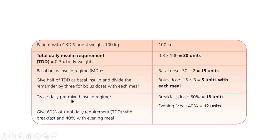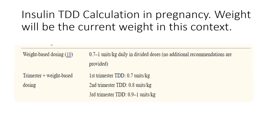If giving twice-daily pre-mixed insulin — such as Mixtard 30, Humulin 30/70, NovoMix 30, or Humalog Mix 25 — two-thirds (60%) of the dose is given in the morning at breakfast, which is 18 units in this example, and one-third (40%) is given at the evening meal, which is 12 units. For a pregnant patient, weight used is current weight, not pre-pregnancy weight.